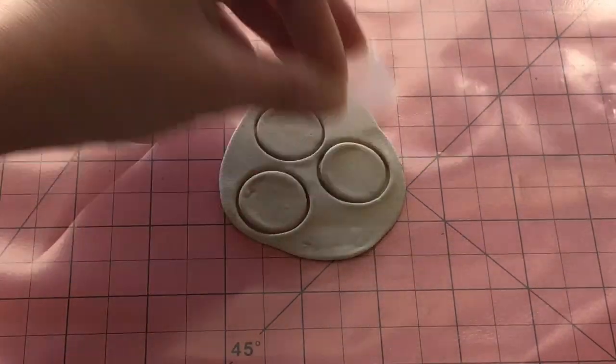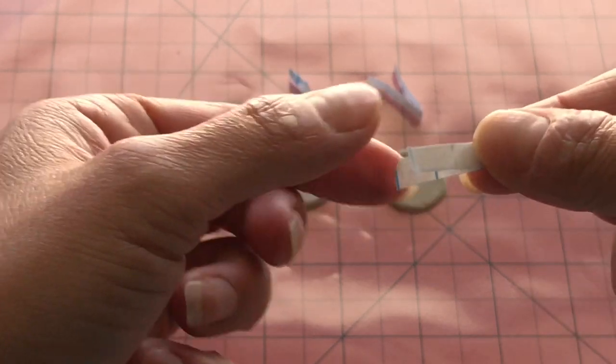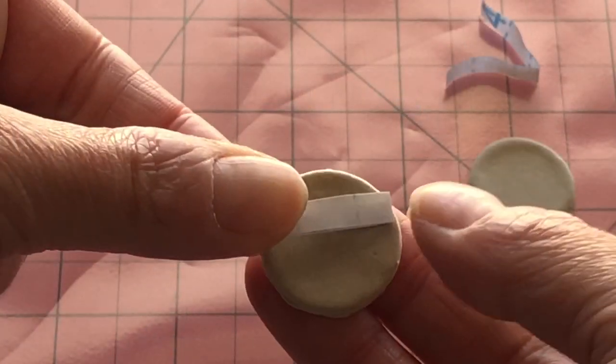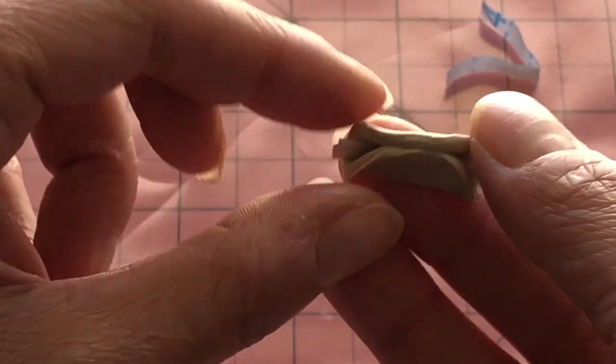It's optional, but if you'd like to add a fortune inside, prepare a thin strip of non-stick paper. Fold it in half and place it above the center line of the clay circle as shown. Now fold the cookie in half and pinch the very top closed.